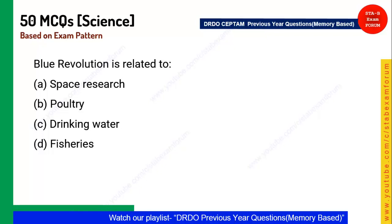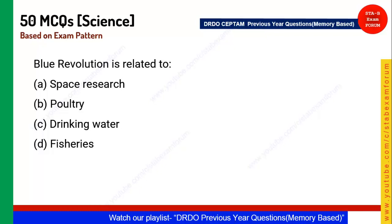Next question: Blue revolution is related to what? There may be questions related to revolutions in upcoming exams, so learn all of them. Blue revolution is related to fisheries because fish live in water. Option D is the correct answer.